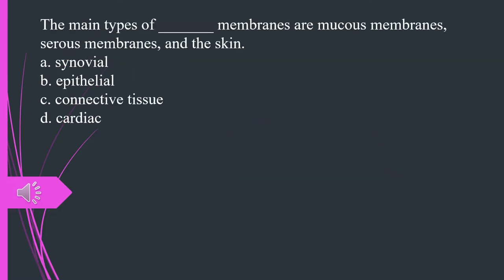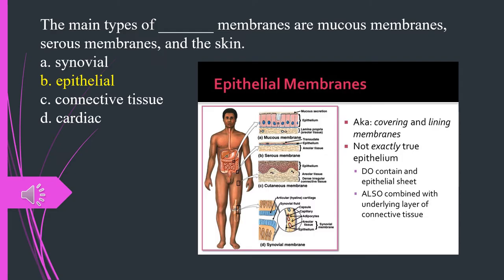The main types of what membranes are mucous membranes, serous membranes, and the skin? A. Synovial. B. Epithelial. C. Connective tissue. D. Cardiac. The answer is B. Epithelial.